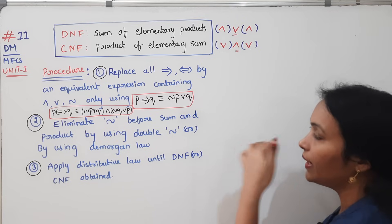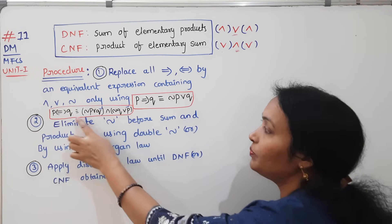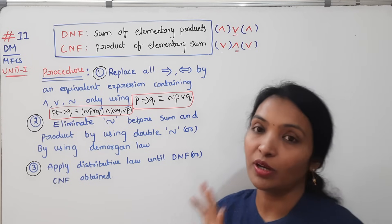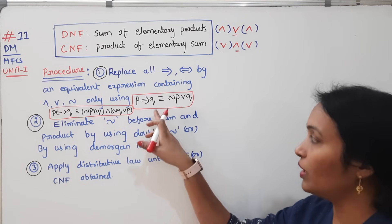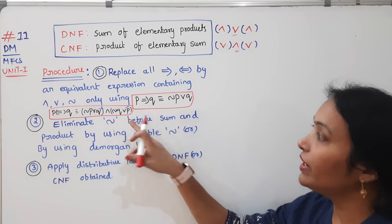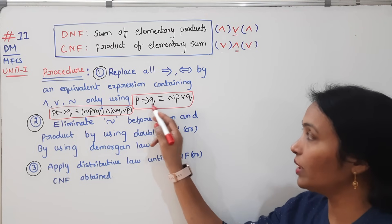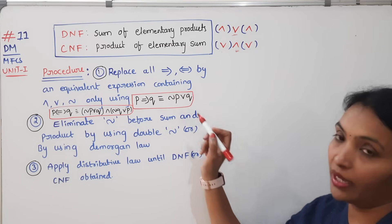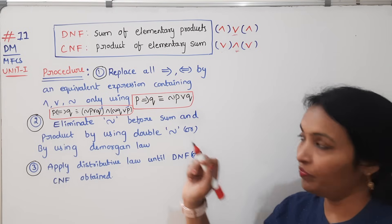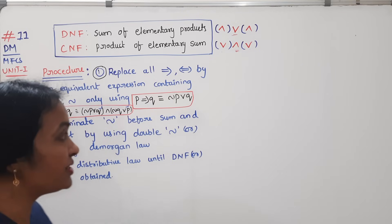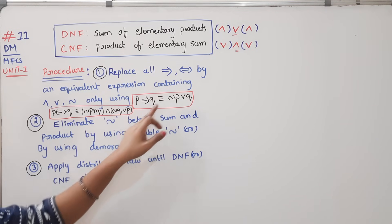In the component statement, we have implies and biconditional. We will solve that in DNF and CNF. In the first step, we replace implies and biconditional. The standard formula: P implies Q means negation P or Q. P biconditional Q means (negation P or Q) and (negation Q or P).